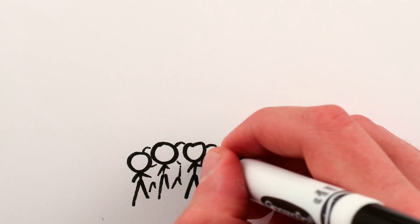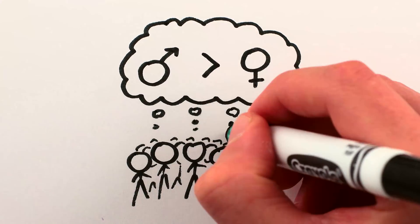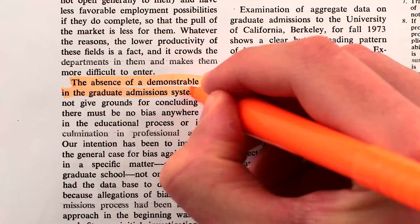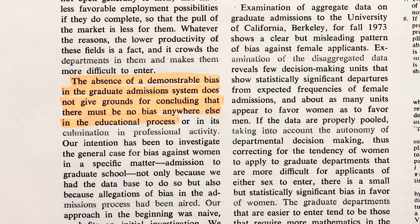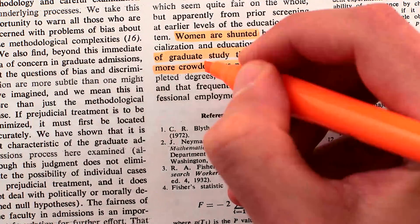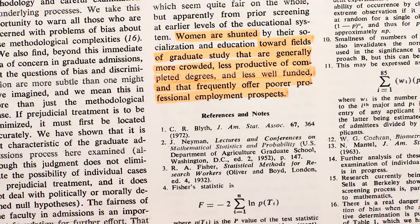But ultimately, as the Berkeley study concluded, the problem is a bigger, societal one. The absence of a demonstrable bias in the admissions system does not give grounds for concluding that there must be no bias anywhere else in the educational process. Women are shunted towards fields of study that are generally more crowded, less productive of completed degrees, less well-funded, and that frequently offer poorer professional employment prospects.